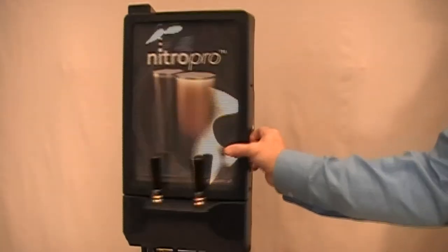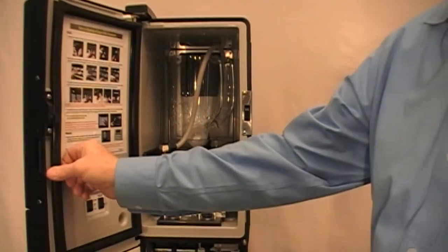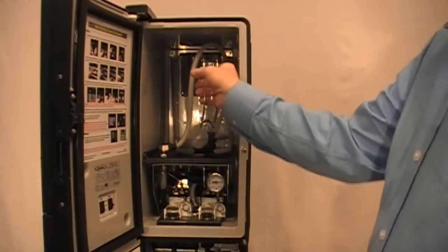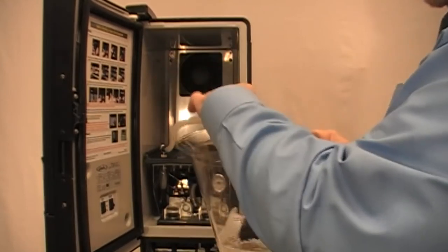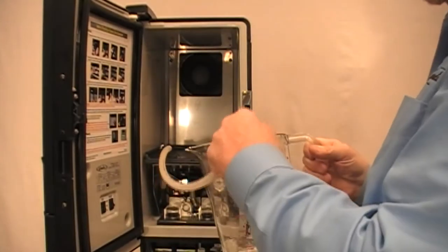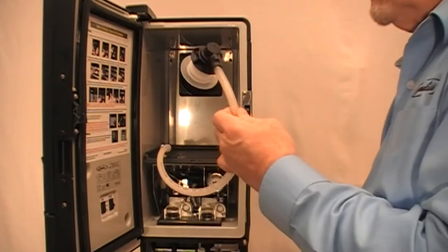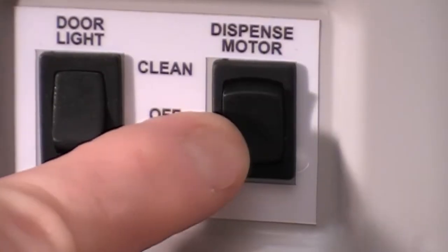After the 20 minutes, open each of the dispense taps separately and again pour another quarter of a gallon of sanitizer. Then remove the BIB adapter by rotating counterclockwise and place the dispense motor switch on the inside door panel back to the on position.